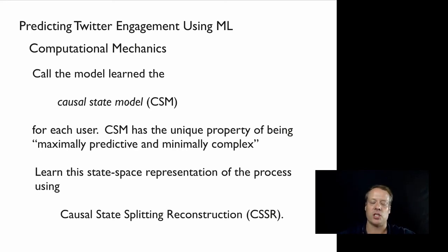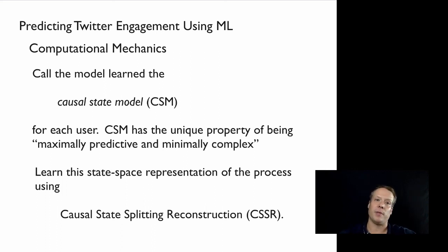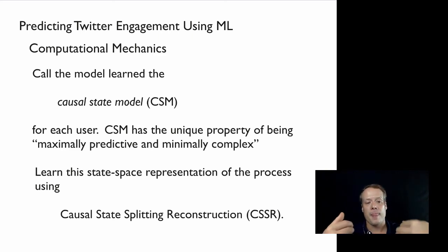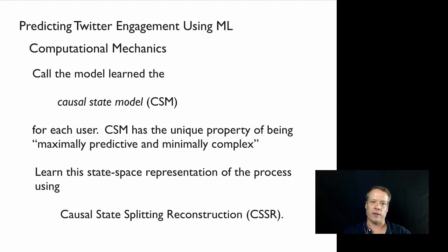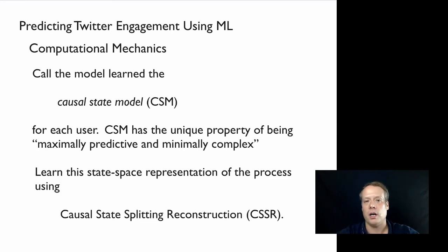We call this model the causal state model for each user. Causal state modeling is powerful because it has the unique property — statistically proven under the causal state splitting and reconstruction algorithm — of being maximally predictive and minimally complex. These systems have the maximum ability to predict the future given the past behavior observed so far, with no additional biases, and at the same time they have the smallest number of states in the system — that's what we mean by minimally complex.